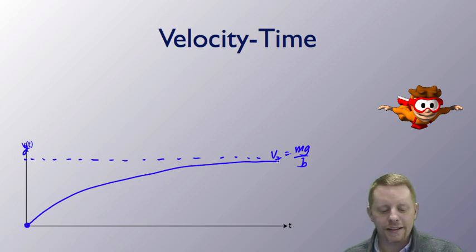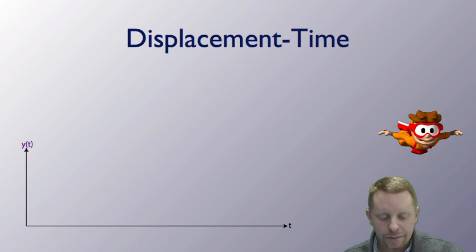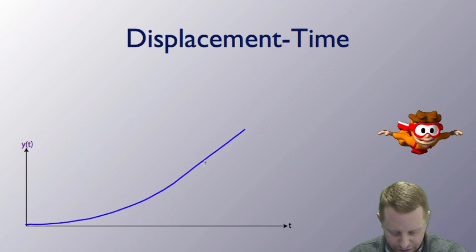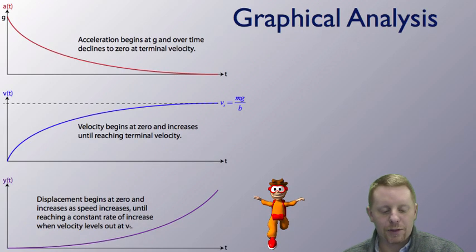And finally, let's look at this position time or displacement time. Displacement is going to begin at zero, of course, and increases as speed increases until it reaches a constant rate of increase when the velocity levels out at v_t. So it's going to look kind of like, well, let me redo that. That's not quite the prettiest. It's going to look kind of like that and get to a point where now you're in a linear regime where you have a constant velocity.